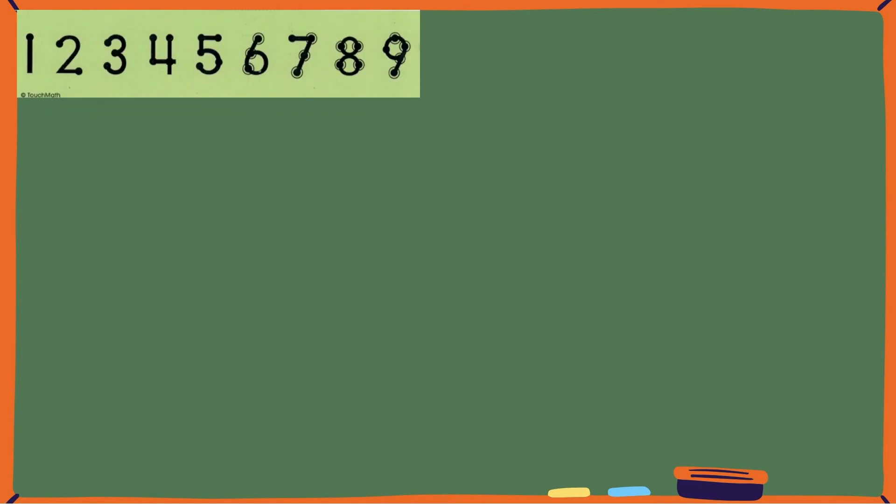In this final problem we'll take a look at how to count a double touch point. Let's place three double touch points on the six. We'll touch and say seven and then count on.